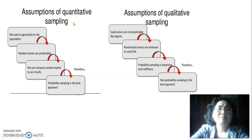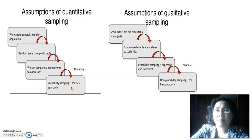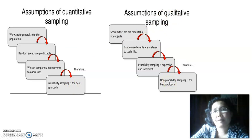In quantitative sampling, what you need is probability sampling. In qualitative sampling, what you need is non-probability sampling.